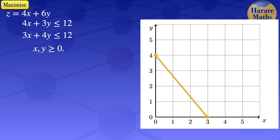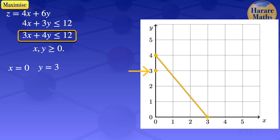I now move on to the second constraint, 3x plus 4y less than or equals 12, and draw a line which corresponds to that constraint. When x equals 0, y equals 12 divided by 4, so y equals 3. I'll mark the point (0, 3) on the graph. When y equals 0, x equals 12 divided by 3, which gives us 4. I'll mark the point (4, 0) and join those two points with a line — that's the line corresponding to that constraint.